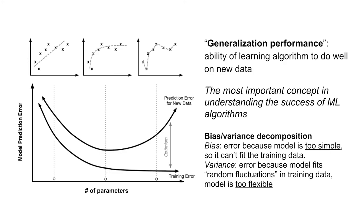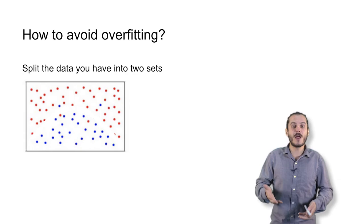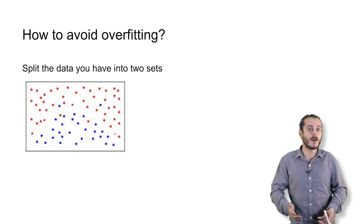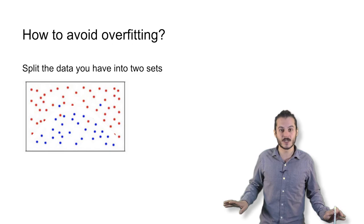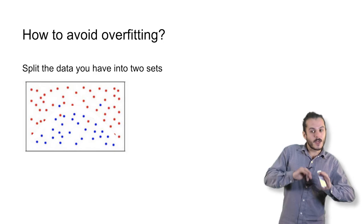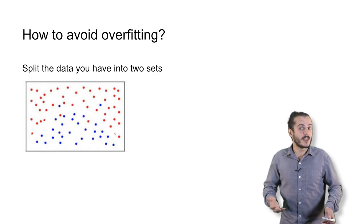Now you might ask, how should one select the number of parameters or the complexity of the model to avoid overfitting? To have the model be flexible enough to capture the real patterns in the data, but not so flexible that it just memorizes the training data set instead of learning the underlying concept. One technique you will hear about and see used is something called cross-validation or validation.